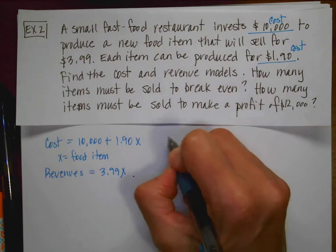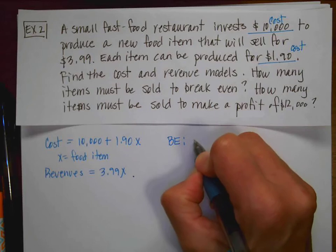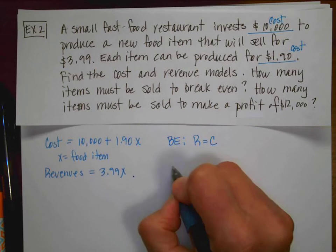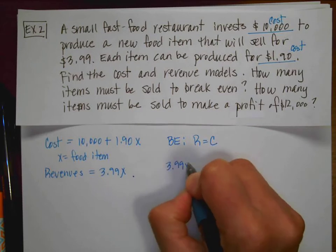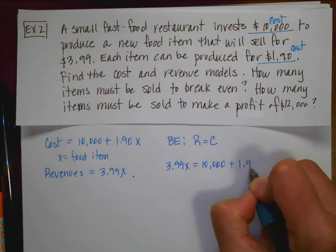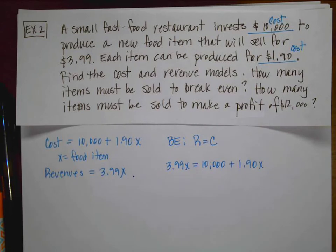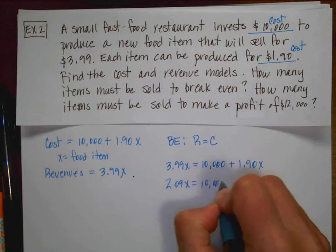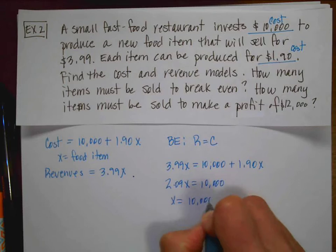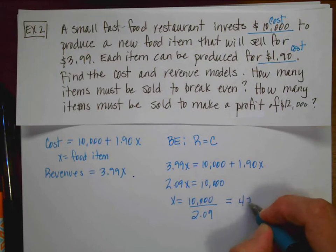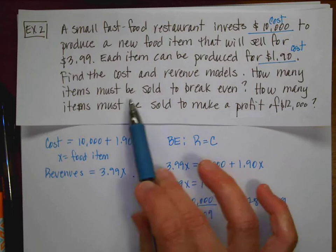The second question says, how many to break even? So remember for my break even point, that is when the revenue is equal to the cost. So I'm going to set up that situation. So I'm going to say 3.99X is equal to the $10,000 plus the 1.90X. When I combine like terms, I get 2.09X is 10,000. X is 10,000 divided by 2.09. And when I do that math, I get 4784.689. And remember,